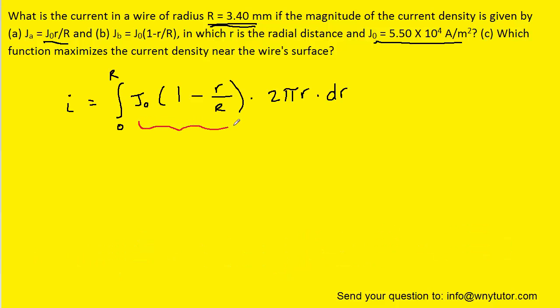Now part B will be a very similar procedure. We just have a different current density given to us. So this is the J sub B value. And then right here is that same dA term that we derived earlier.